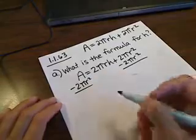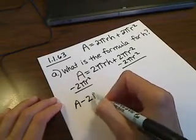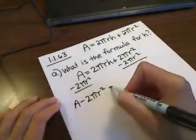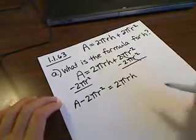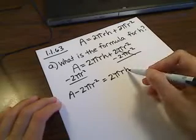Now these two are not like terms, obviously, so I'm just going to write it as a minus 2 pi r squared, and then on the other side, 2 pi r h, because that adds to be zero.